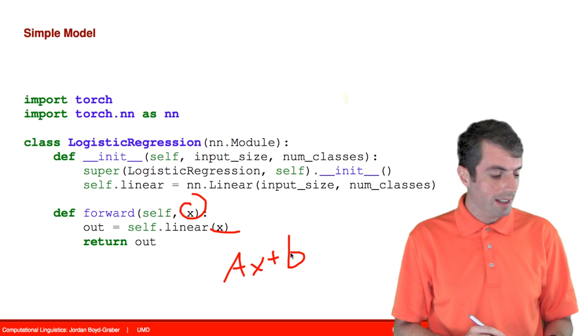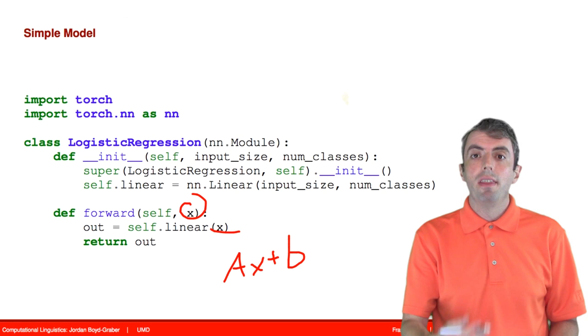And later, when we define the loss function during optimization, the softmax function or the logistic function will come into play.